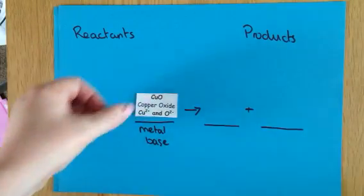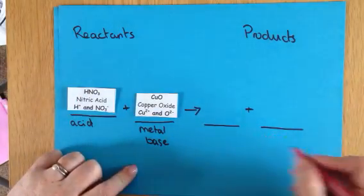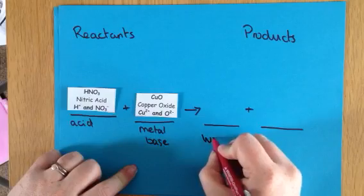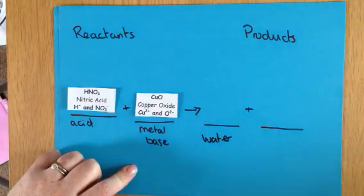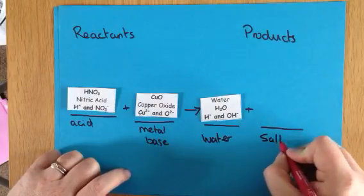So we're going to start off reacting nitric acid and copper oxide. The really important things for you to remember, or at least it will help you greatly if you remember, that the products are going to be water and salt.